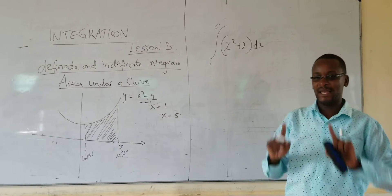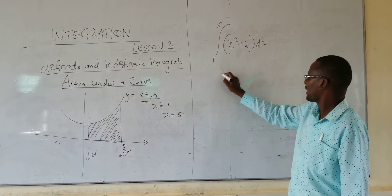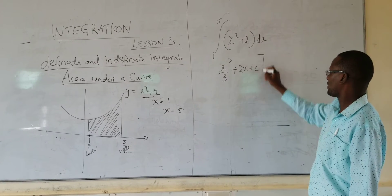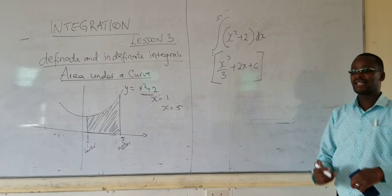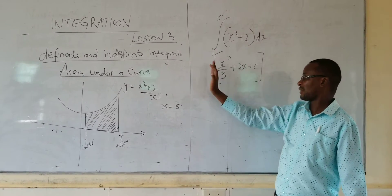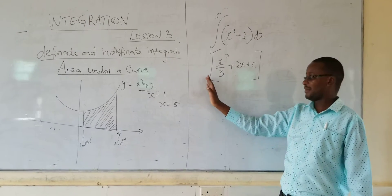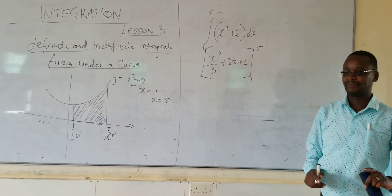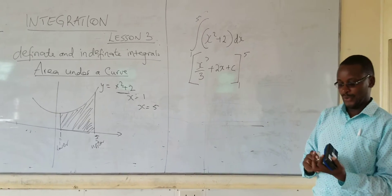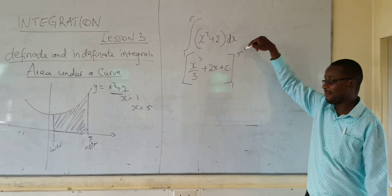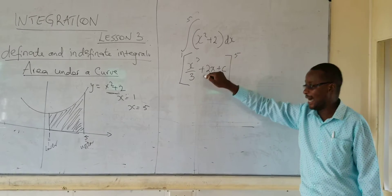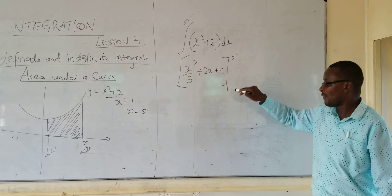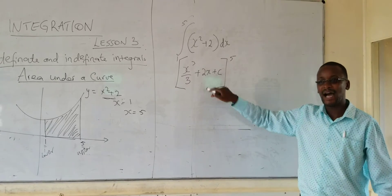First of all, you integrate normally the way we were integrating. Integrate this and you will get X cubed over 3 plus 2X. You can add a constant — no problem. Now that you have already integrated, these limits we will not write them in front of the brackets but at the end of the box brackets. The box brackets mean you are supposed to substitute the upper limit first — substitute X equals 5 here, you will get an answer. Then substitute the lower limit, X equals 1, and get the difference.